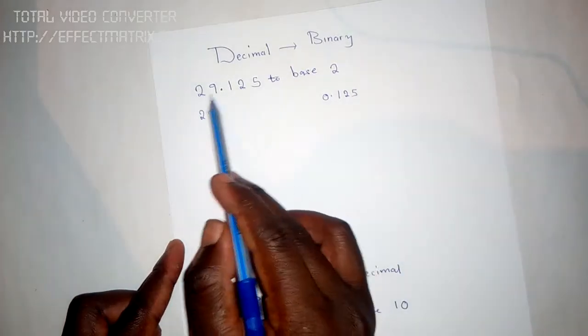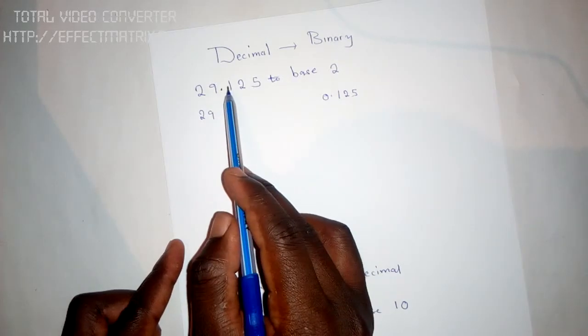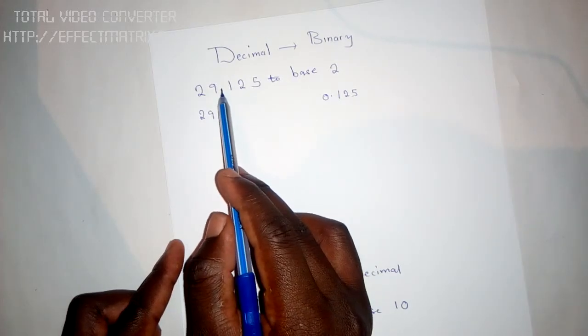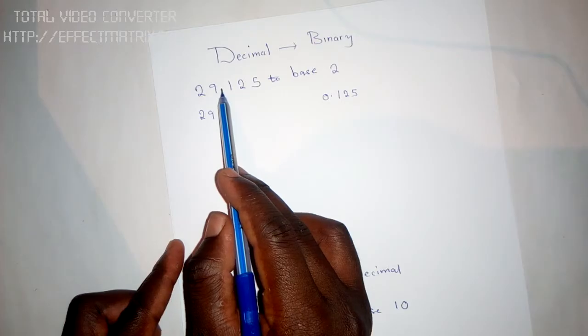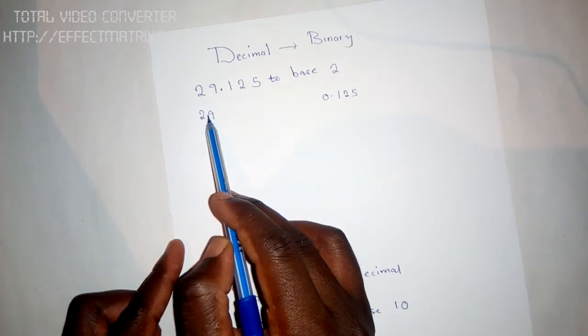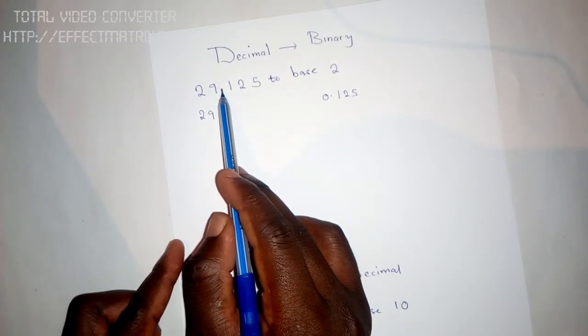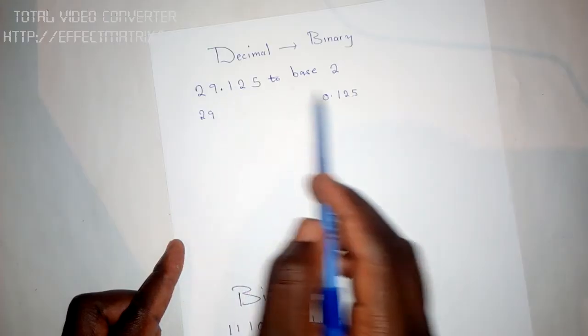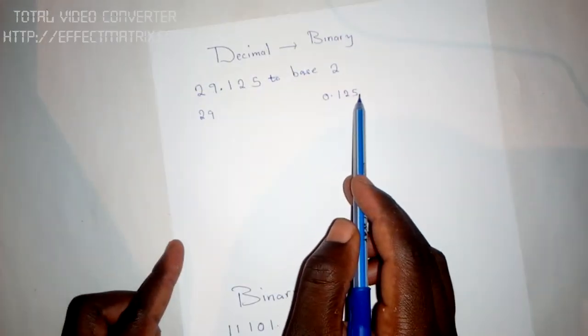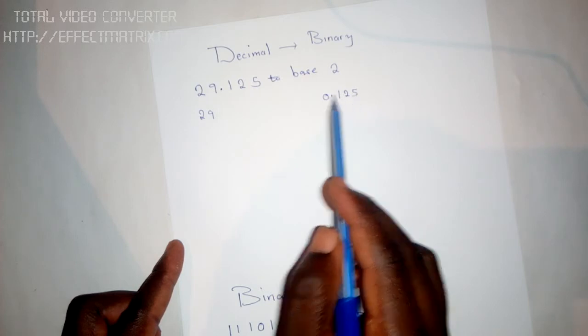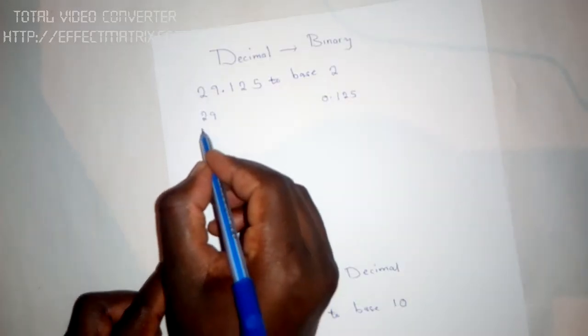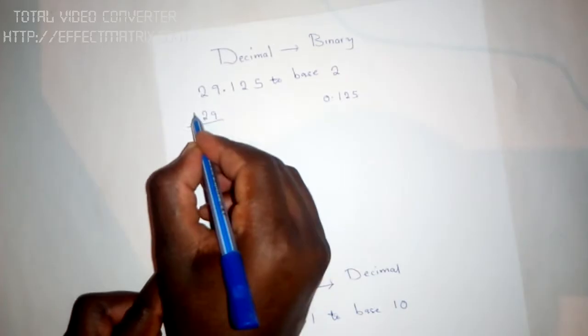In short, you just get the number that is before the point, which is 29, and the numbers that are after the point - one, two, and five. From there, you make a line.